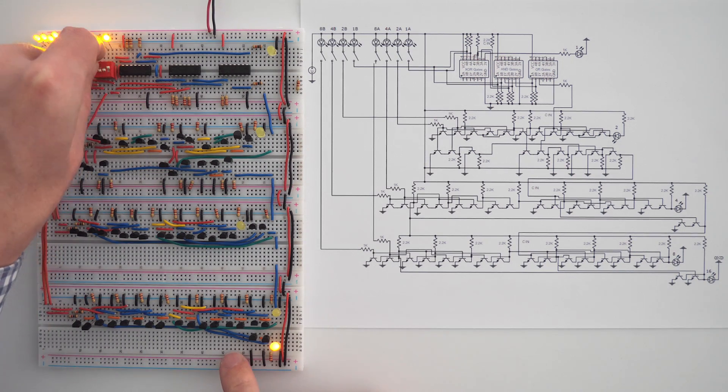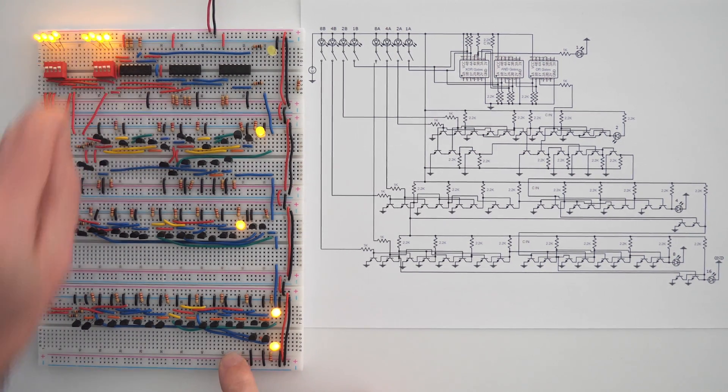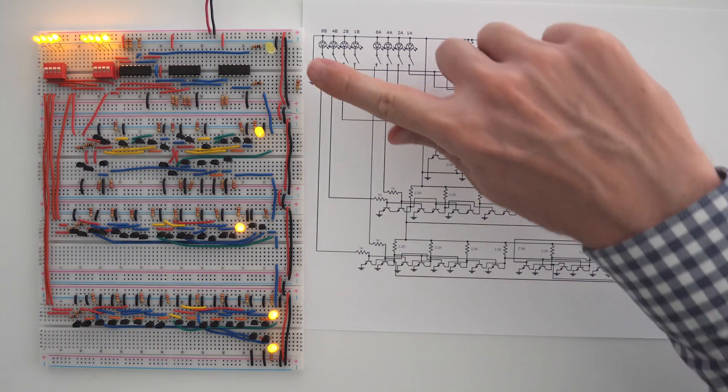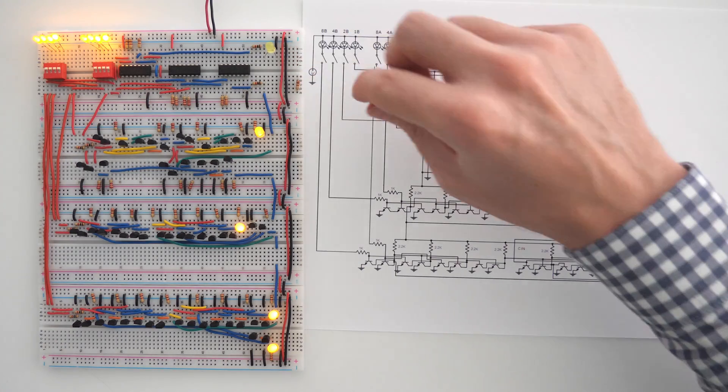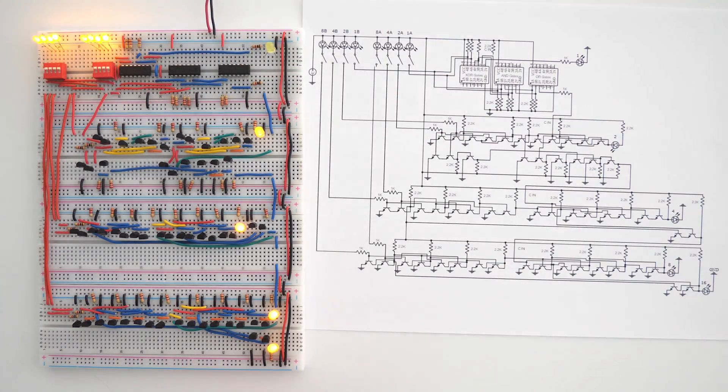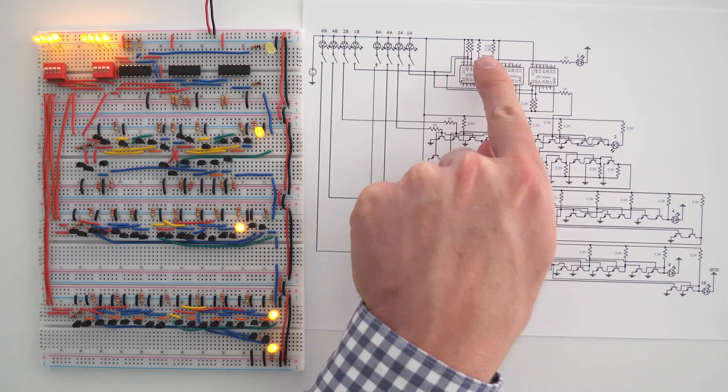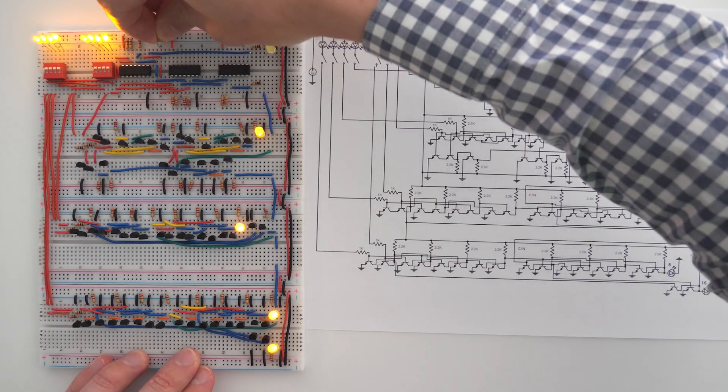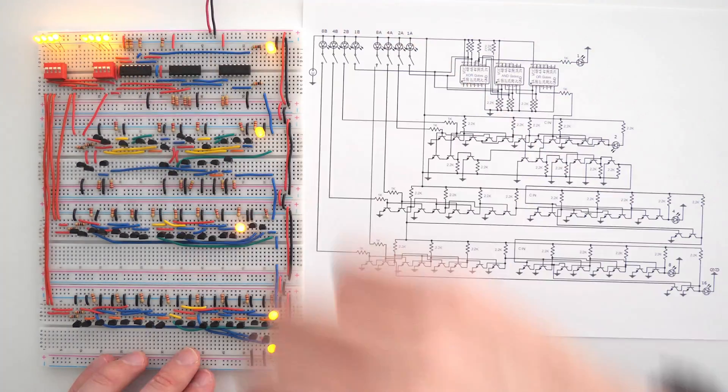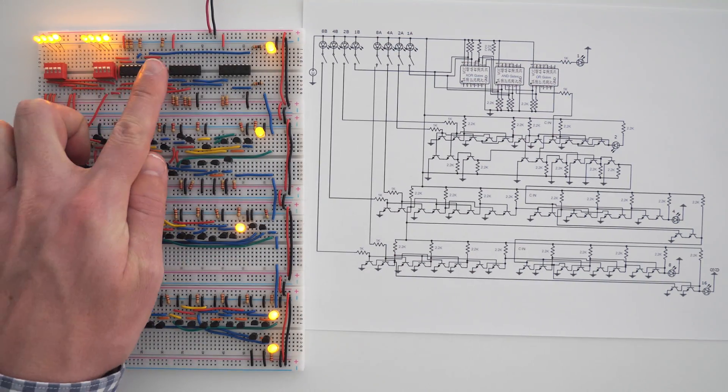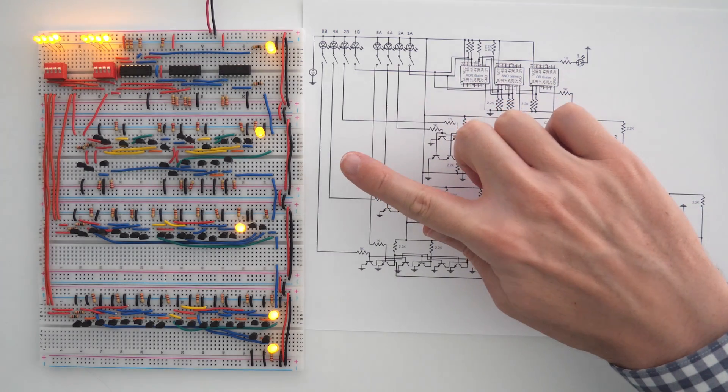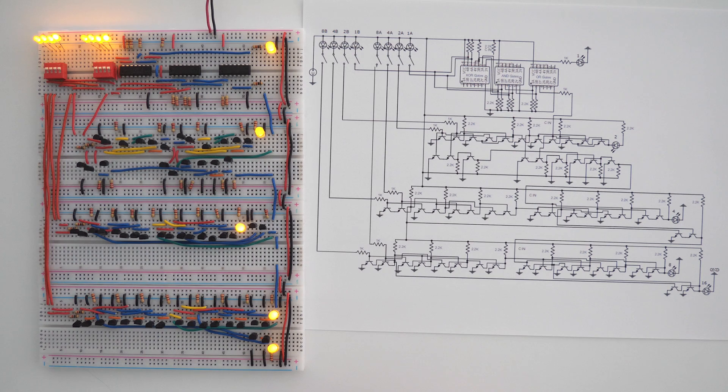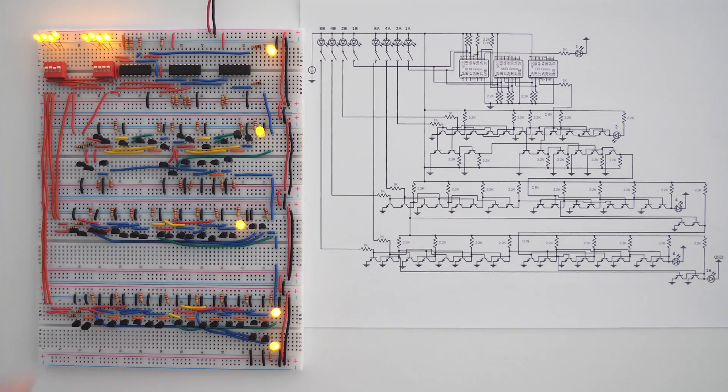Another good one to test is just to turn on all the switches. So right now we have 15 plus 15 equals 30. But this calculator can add up to 31, but we need to add in the carry-in on this first full adder. So we have a carry-in right here. So we'll place this resistor in the carry-in slot, which is right here. So now we have 15 plus 15 plus 1 equals 31, and now all the LEDs are on. If we actually wanted to go to 32, we would have to add a 6th bit.